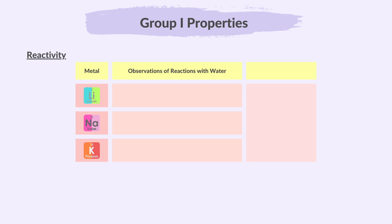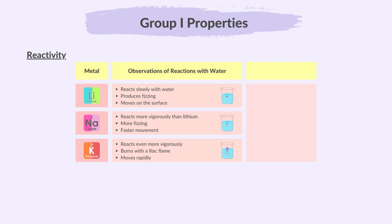Group 1 metals react similarly with water. Here are the observations of the reactions of the first 3 elements in group 1 with water. Lithium reacts slowly with water, produces fizzing and moves on the surface. Sodium reacts more vigorously than lithium with more fizzing and faster movement. Potassium reacts even more vigorously, burns with a lilac flame and moves rapidly.